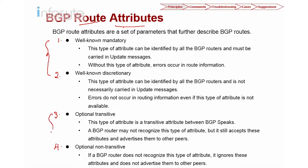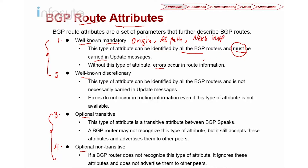There are two main groups: well-known and optional. Well-known means those BGP attributes implemented in any router, regardless of vendor — the attributes are universally recognized. This type of attribute can be identified by all BGP routers and must be carried in the update; that is what mandatory means. If this attribute is not carried, an error will occur. Examples of well-known mandatory include origin, AS path, and next hop — these must be present in all BGP routers.